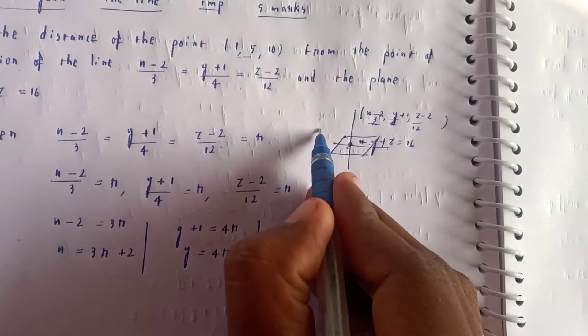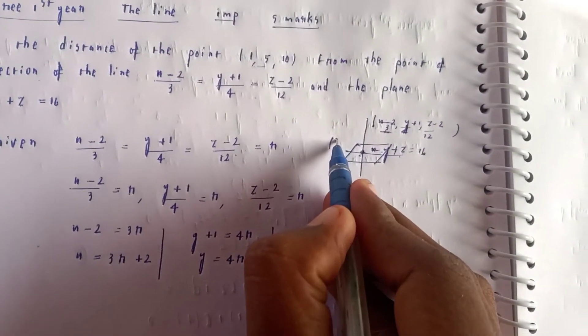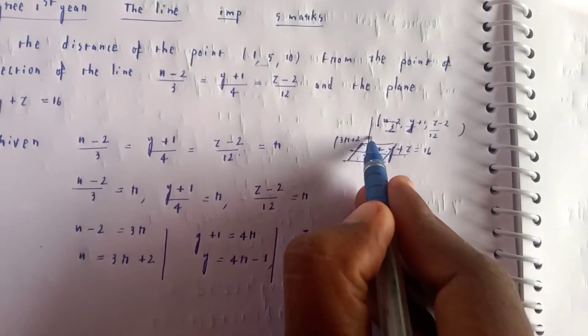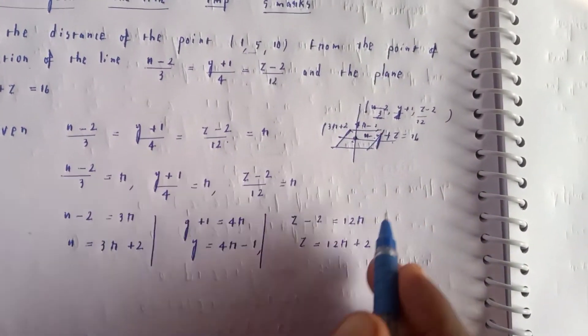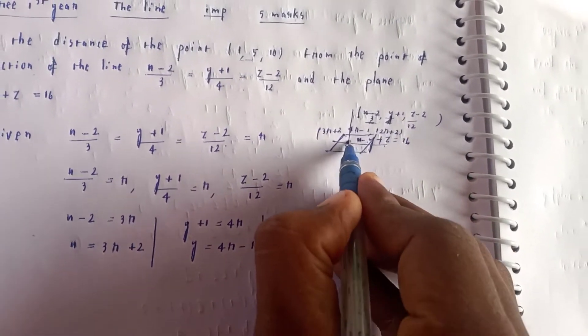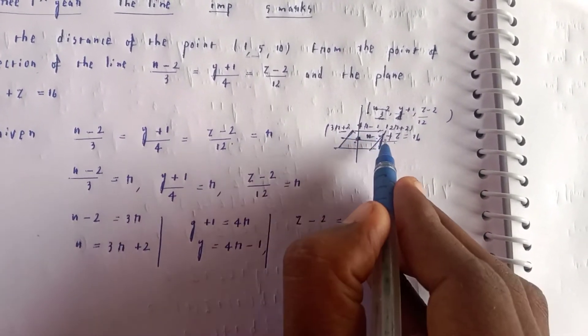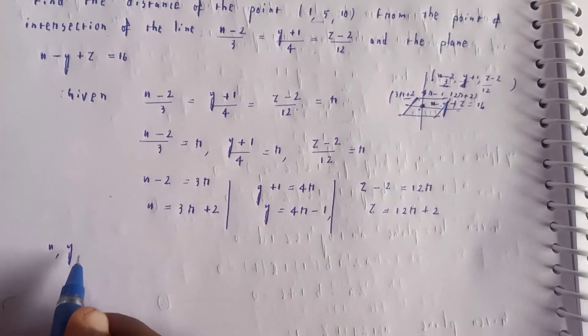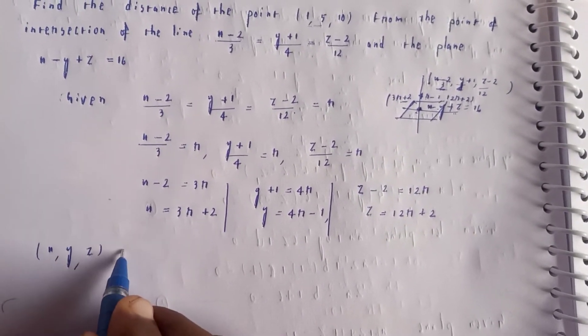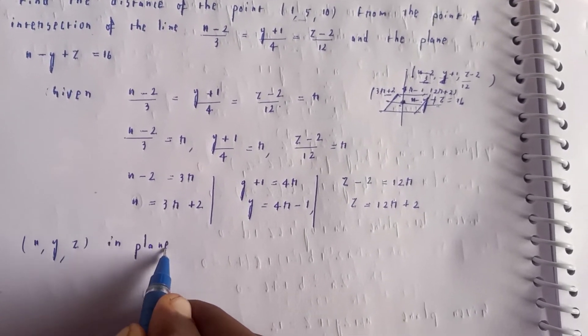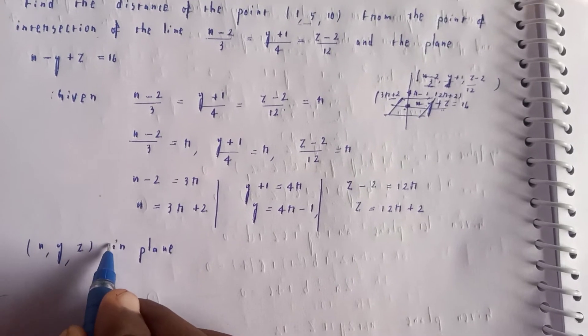The point on the line is (3r+2, 4r-1, 12r+2). This point lies on the plane.